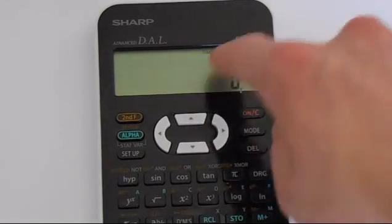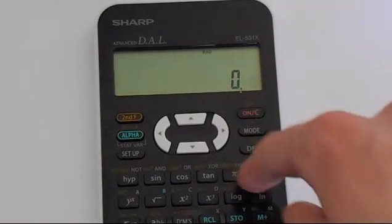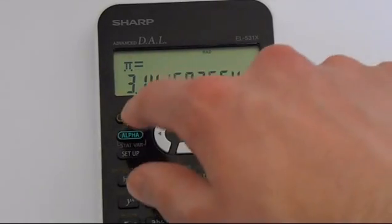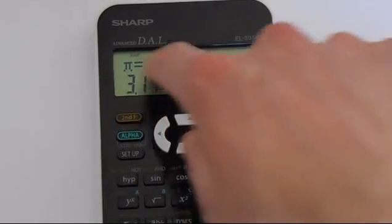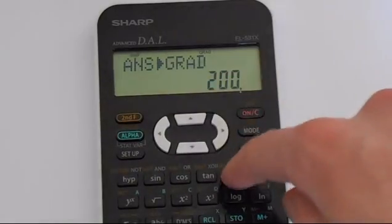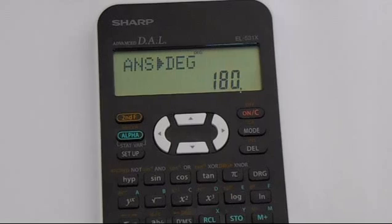So say we put the calculator into radians mode and we had pi, you could convert this in the same way. So second function and the pi button, we get 200 gradians, and the pi button again, and we're back in degrees.